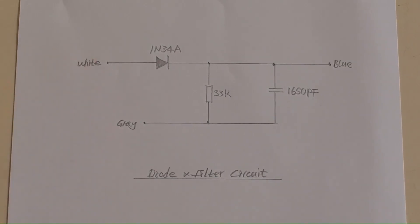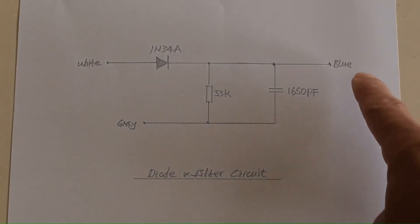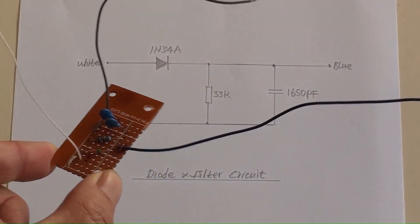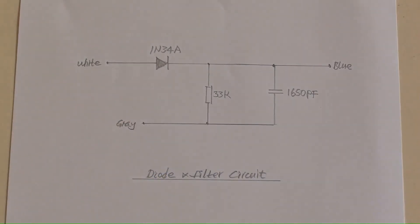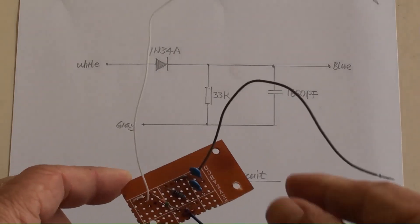White wire is from diode's anode side on the small board. Blue wire is from the diode's cathode side on the small board. Gray wire from the small board is for the earth, or ground.